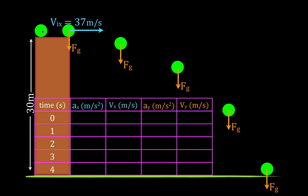There was some force somewhere which caused this object to reach a velocity of 37 meters per second. But once it leaves that surface and follows that path — two-dimensional projectile motion — there are no other forces. There is no force acting on that object in the x direction. The only force is the force of gravity acting straight down. We're going to look at the motion in the x and the y direction.